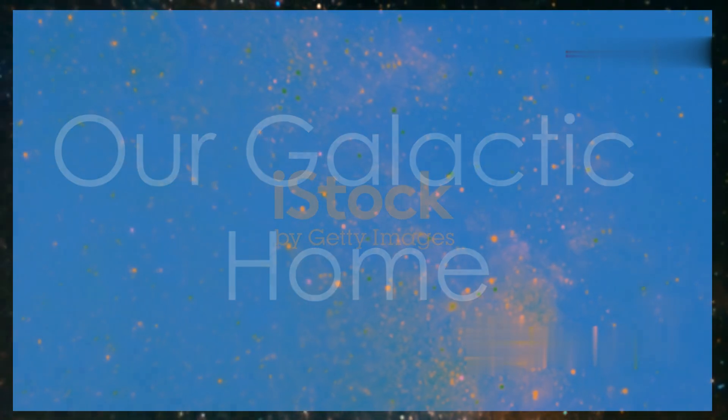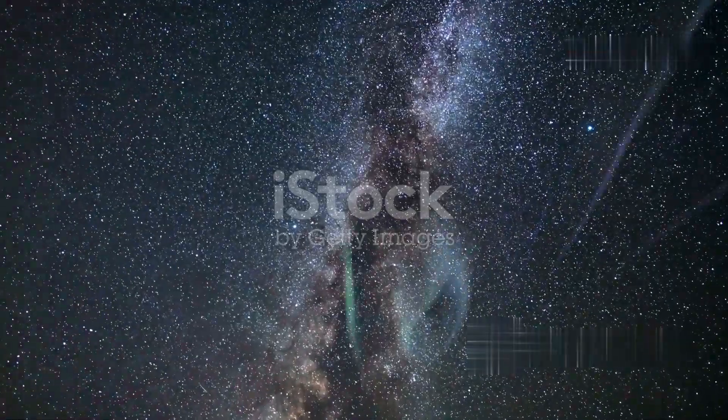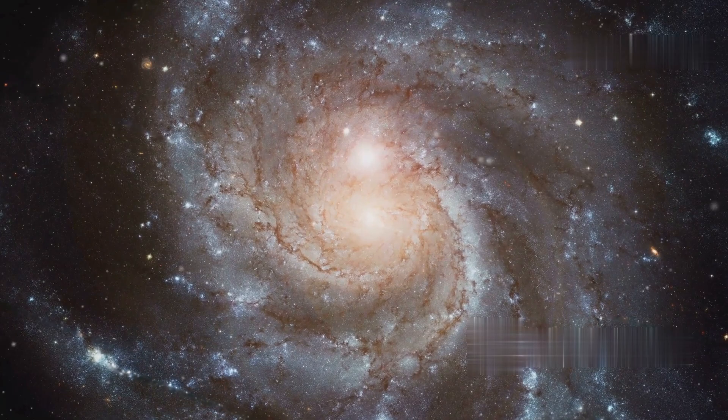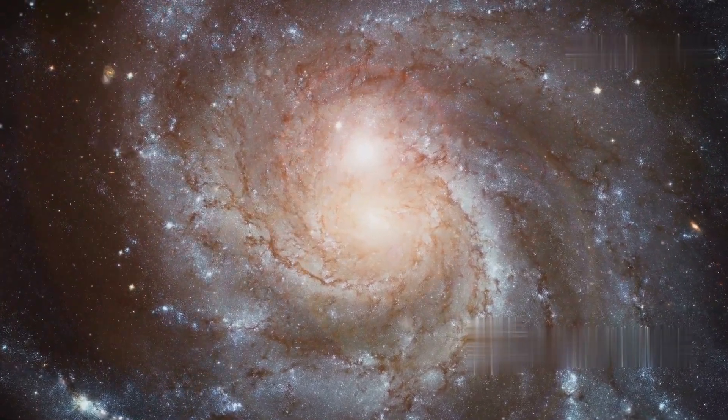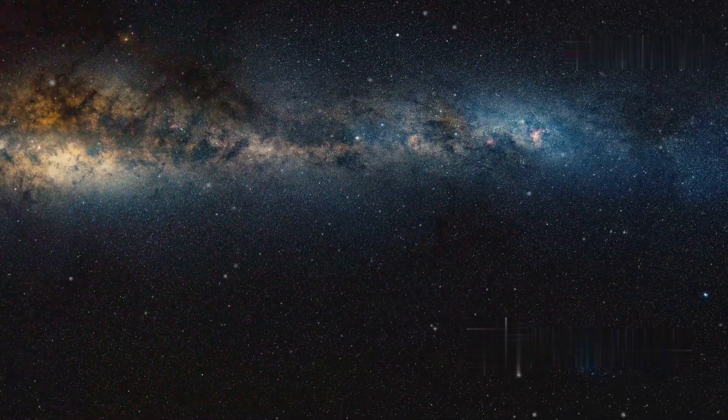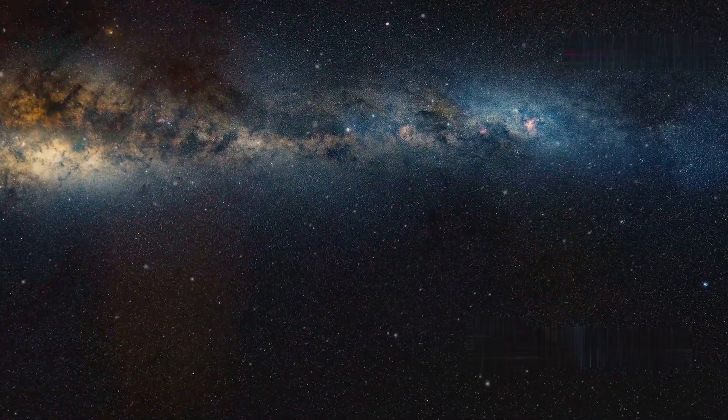Our solar system resides in the Milky Way galaxy, a vast collection of stars, gas and dust. The Milky Way is a barred spiral galaxy with a central bulge and spiral arms that extend outward. Our solar system is located in one of these spiral arms, about two-thirds of the way out from the center.